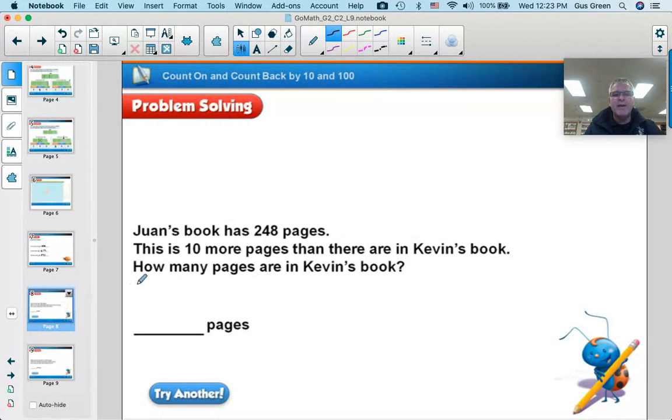Now we could do the same thing by thinking about it in terms of a story problem. Juan's book has 248 pages. Let's draw it. 2 hundreds, 4 tens, and 8 ones. So 248 pages. This is 10 more pages than Kevin's book. How many pages are in Kevin's book?